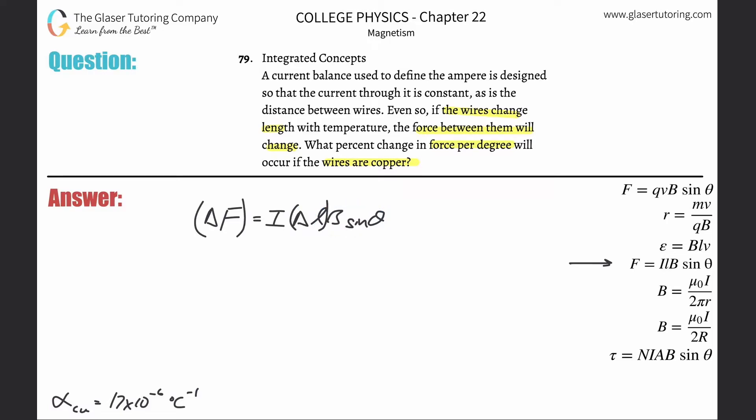The next step is to realize that the change in length is proportional to the change in temperature. This goes back to several chapters ago with thermal heat. The change in length is proportional to the change in temperature, but multiplied by this coefficient, the alpha value.